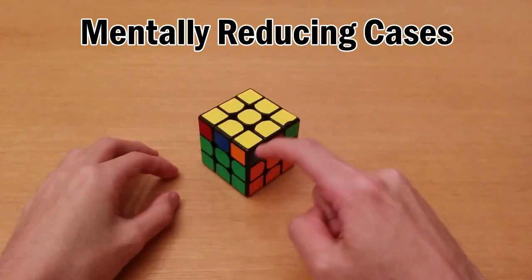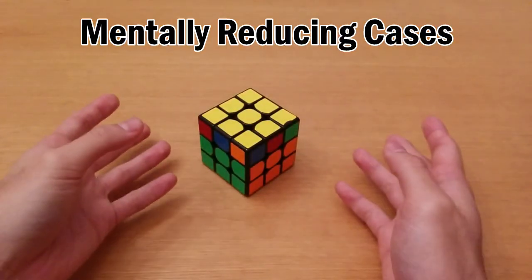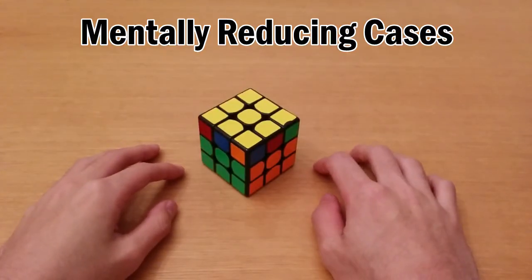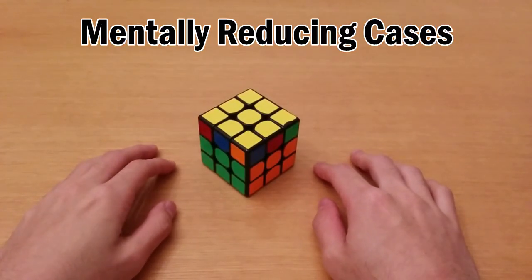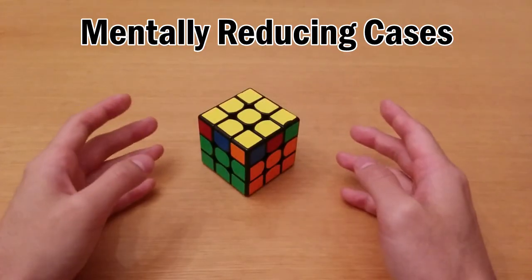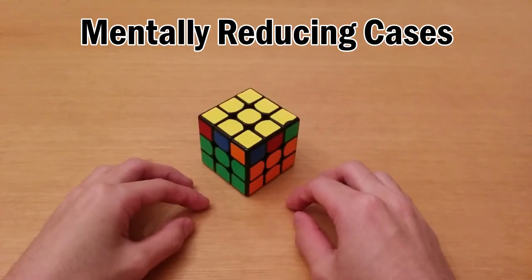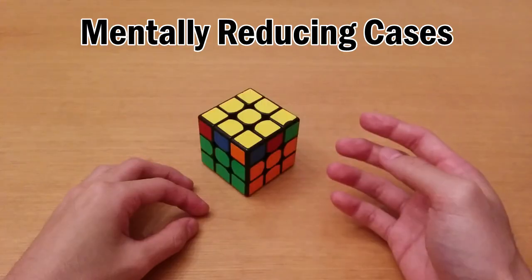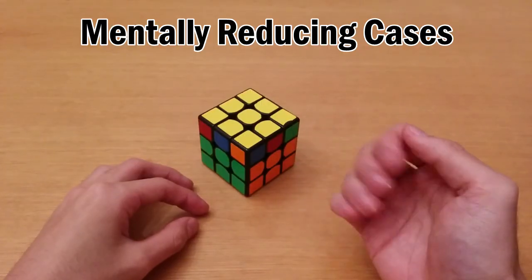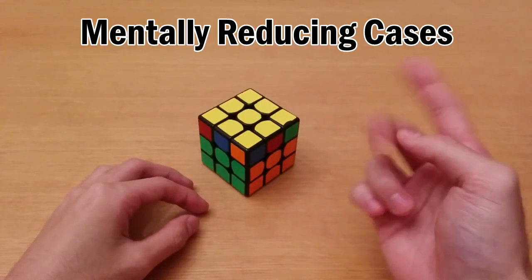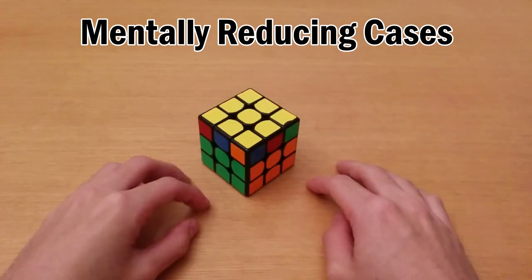But two-side recognition is hard if you get all junk like nothing really matches each other and you don't see any blocks. You don't want to look at every single sticker in this case. What you want to do is reduce the number of cases you can get by doing CP recognition during OLL. So during OLL you should be able to find a way to tell whether your PLL will be a no swap for corners, adjacent swap or diagonal swap. And here's why.